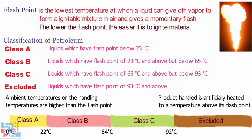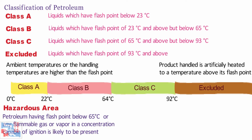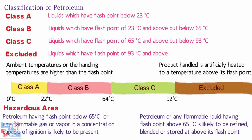An area will be deemed hazardous where petroleum having a flashpoint below 65 degrees Celsius, or any flammable gas or vapor in a concentration capable of ignition, is likely to be present. Petroleum or any flammable liquid having a flashpoint above 65 degrees Celsius is likely to be refined, blended, or stored at above its flashpoint. Liquefied gases like LPG and LNG do not fall under this classification but form a separate category.